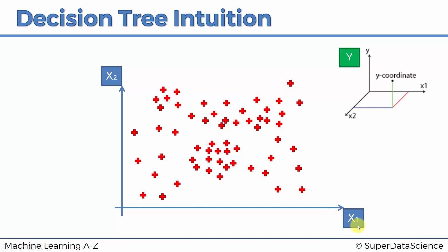Alright, so let's continue. We've got x1 and x2, these are independent variables. The dependent variable, we cannot see it, it's the third dimension. We're actually going to forget about it for a little while, because we need to work with this scatterplot to see how our decision tree is going to be created.